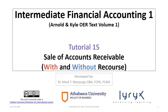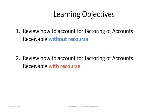Hello and welcome to Intermediate Financial Accounting 1 tutorial 15. In this tutorial we will learn how to account for the sale of accounts receivable, also known as factoring, both with and without recourse. There are two learning objectives: first, to account for factoring of accounts receivable without recourse, and second, to account for factoring of accounts receivable with recourse.